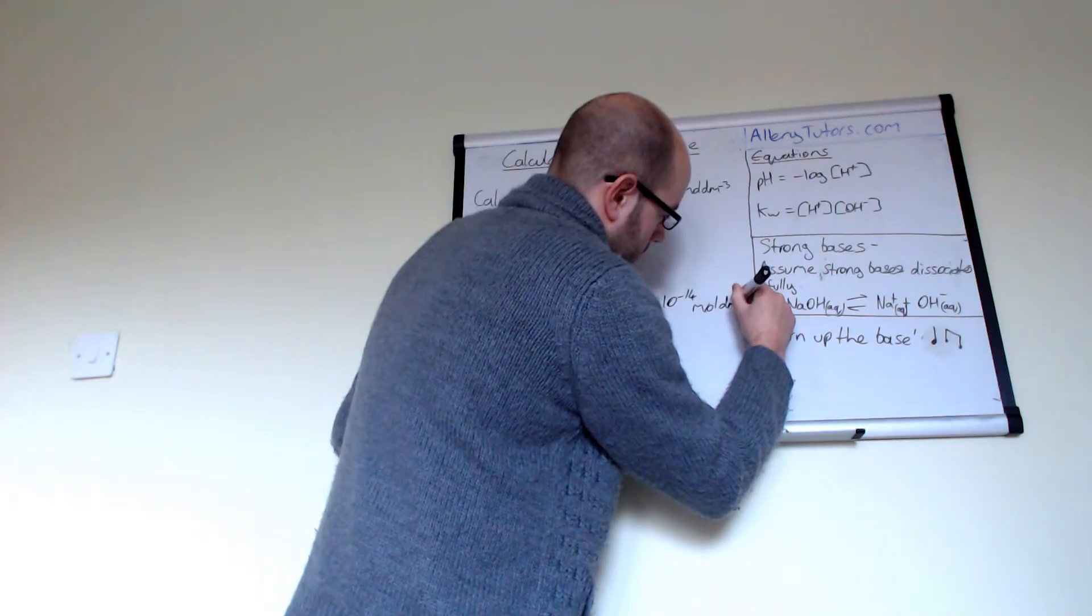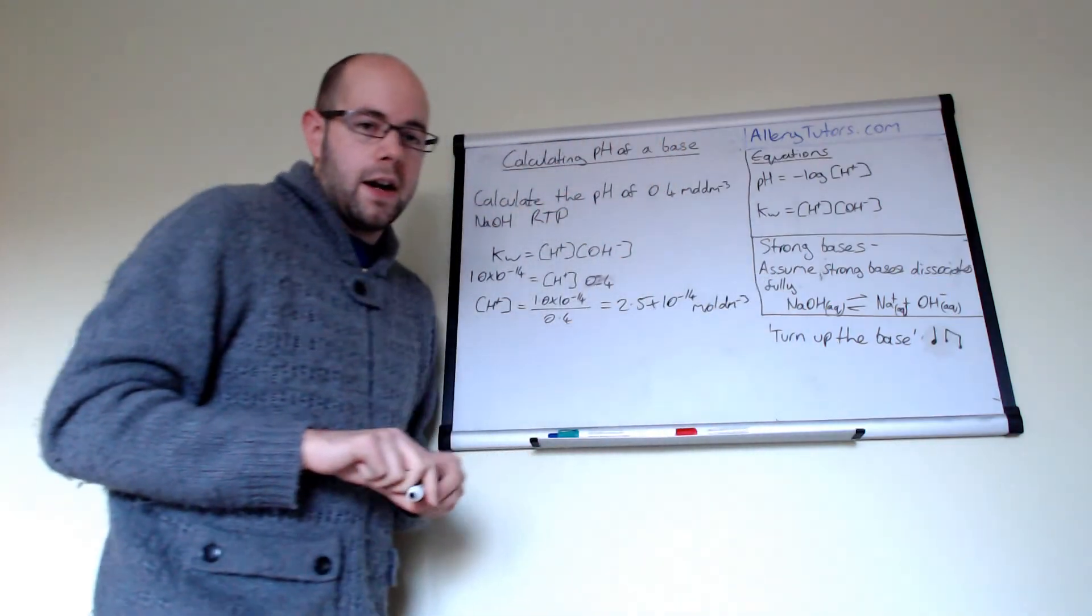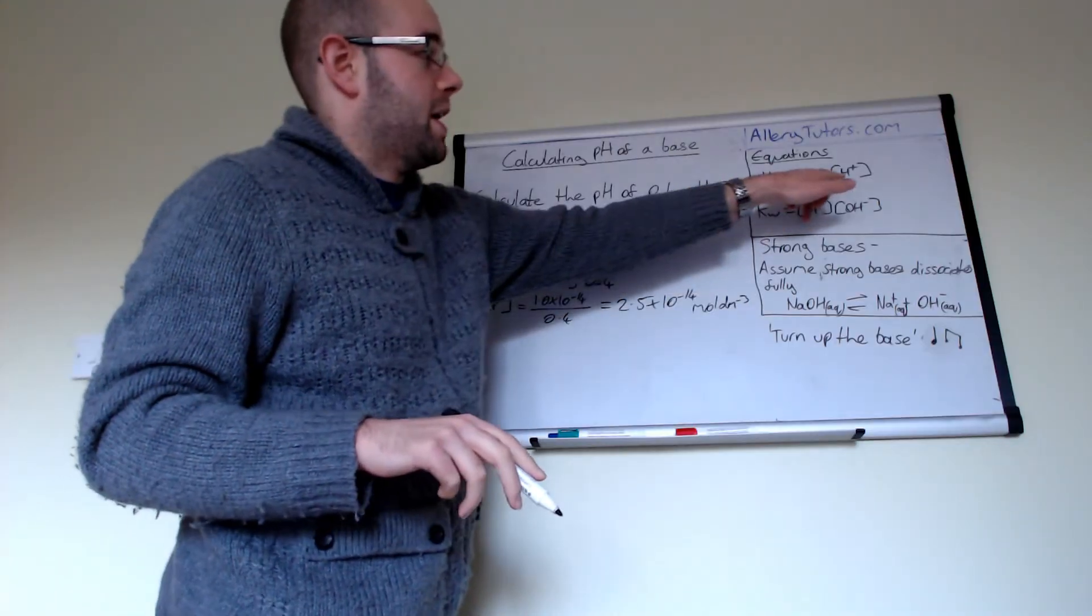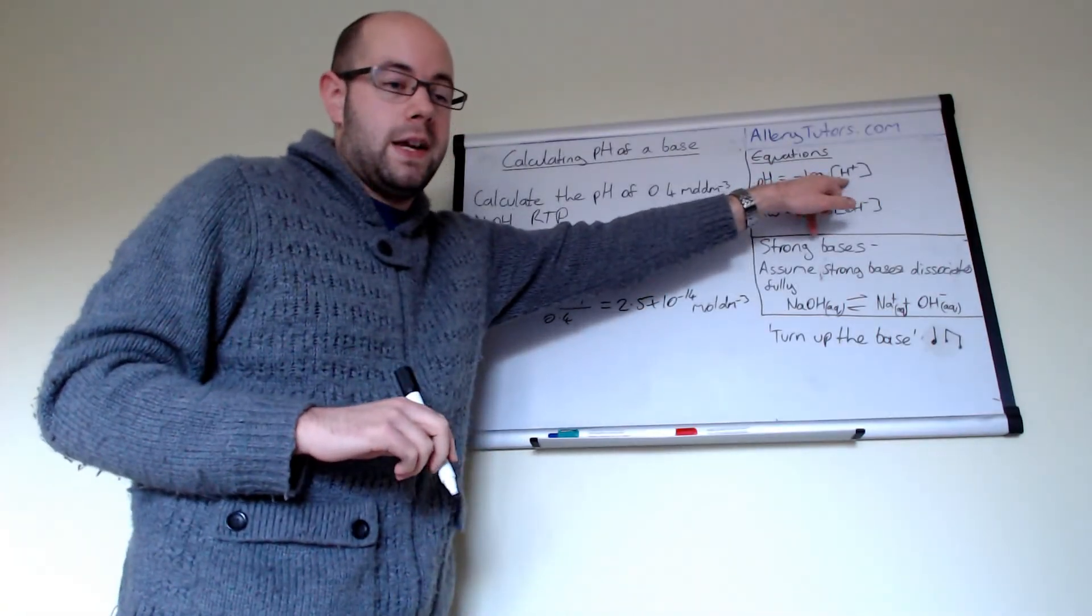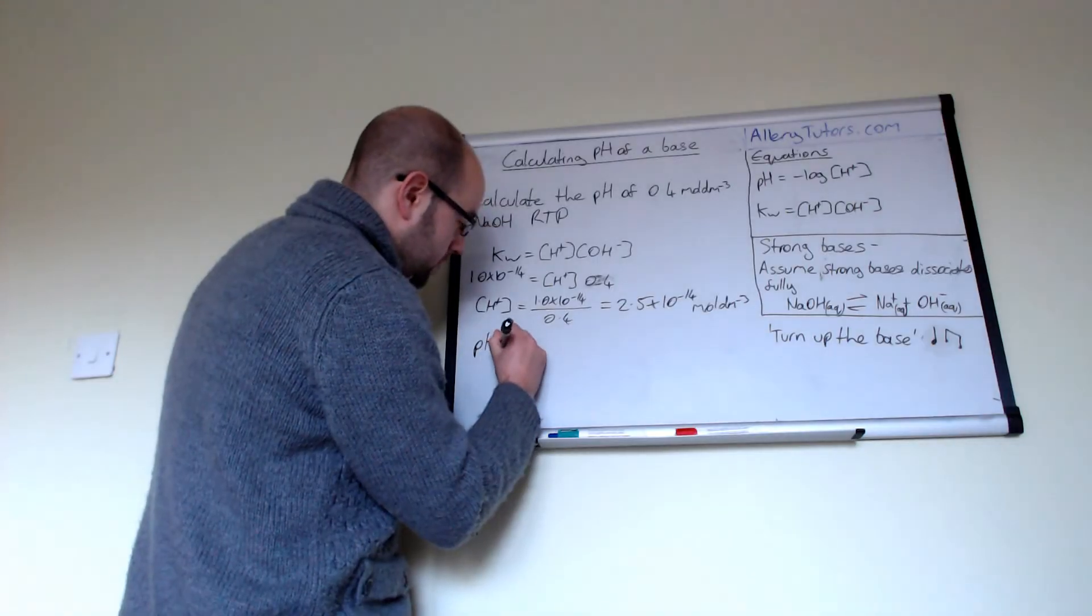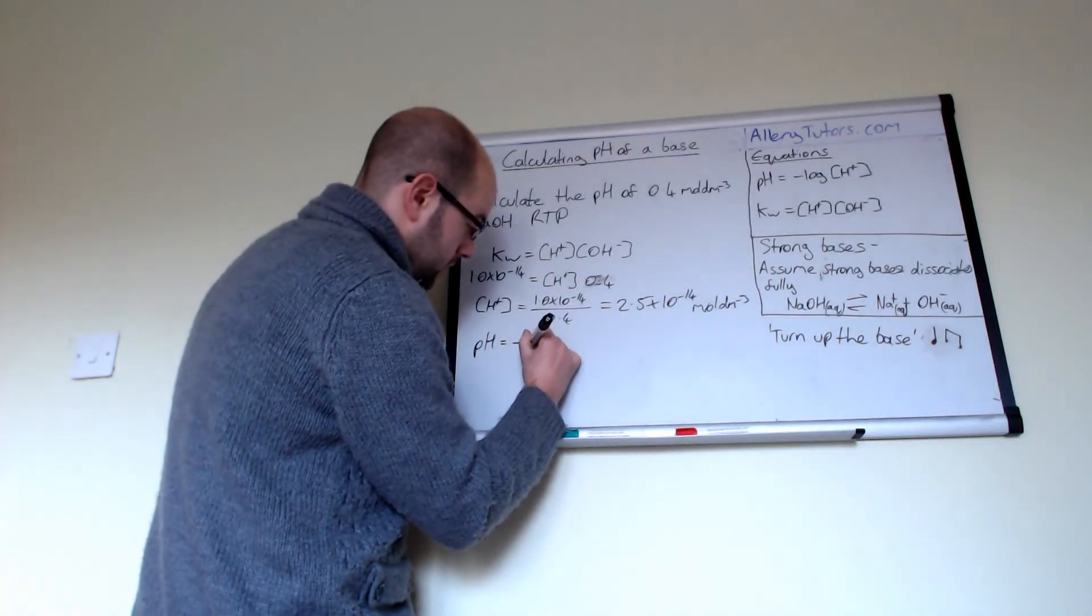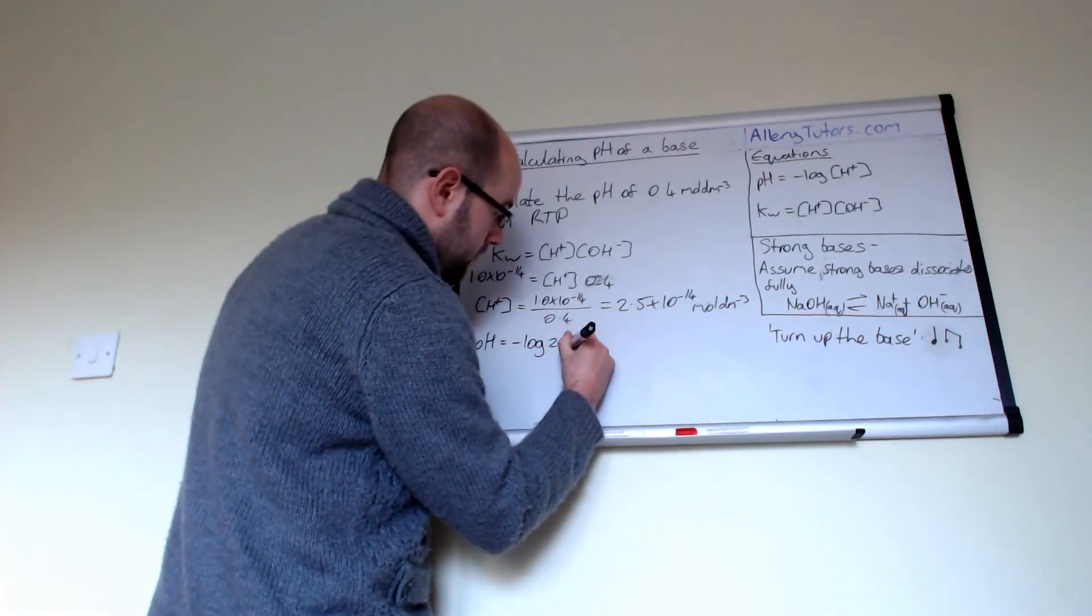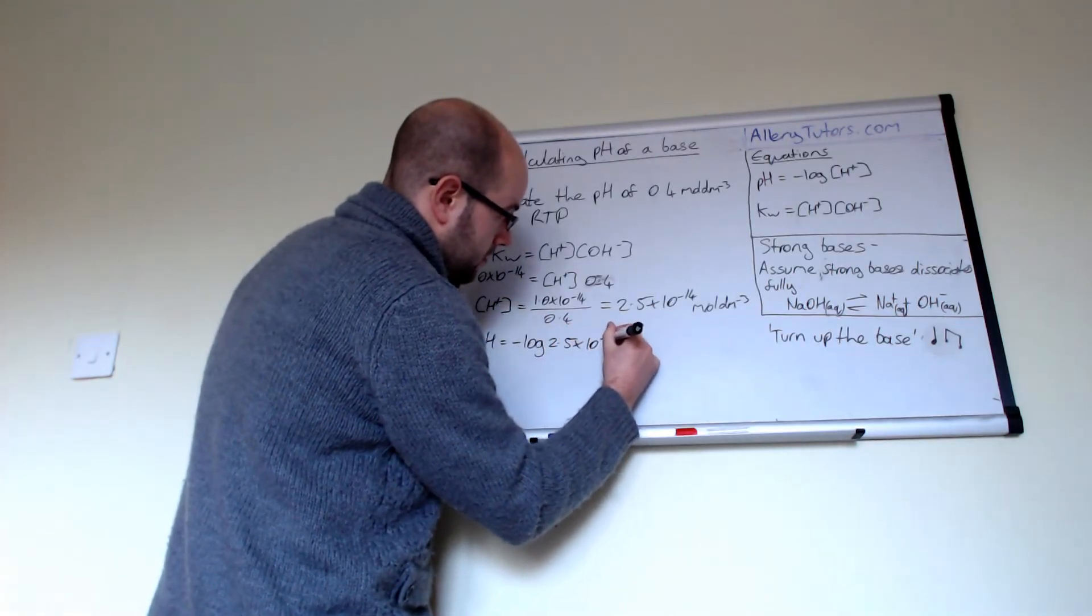The moles per dm cubed, because that's the unit is there. The last step that we have to do is now we have the H plus, we put it back into our pH equation, which is over here. That should tell us our pH. pH will equal the minus log of, and this is our H plus, which is 2.5 times by 10 to the minus 14.